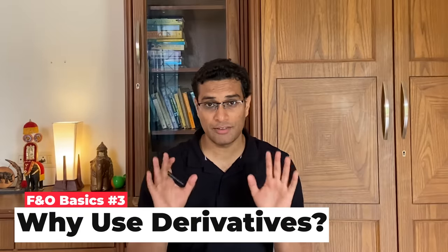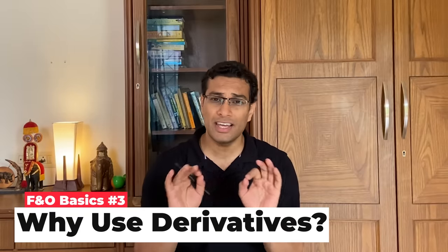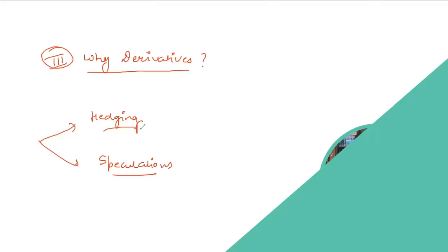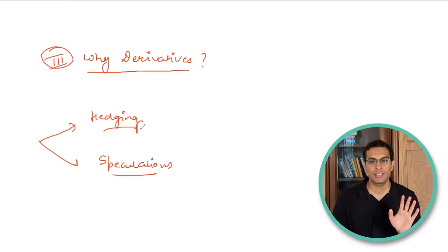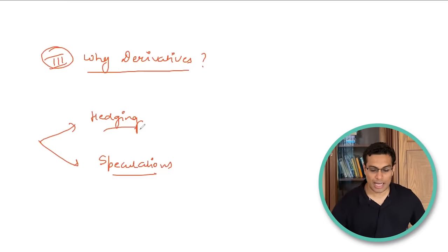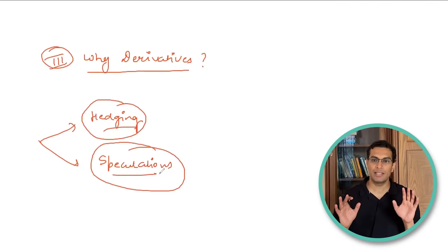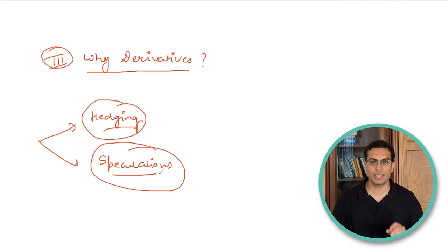Now comes the third and most important point: why derivatives are used in the first place. In the F&O market, you have two approaches. One is building hedging strategies, and the second is building speculation strategies. Let me explain the difference using an easy-to-understand example.